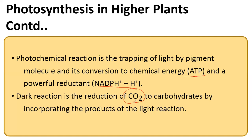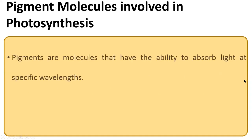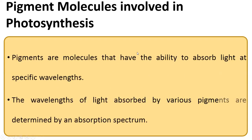In the dark reaction, reduction of carbon dioxide takes place — this is where the actual chemical reaction occurs. It also happens during daytime. To reduce carbon dioxide, both ATP and NADPH (which is a reductant) are required. So the products of the light reaction are utilized in the dark reaction.